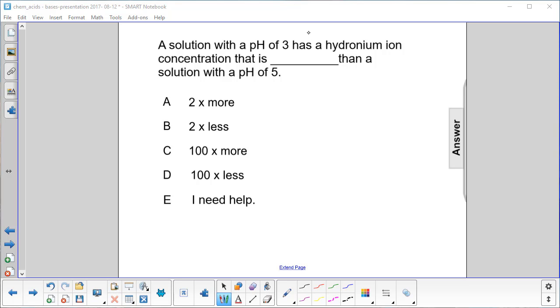A solution with a pH of 3 has a hydronium ion concentration that is what relative to one with a pH of 5?